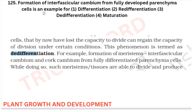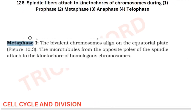Formation of interfascicular cambium from fully developed parenchyma cells is an example of dedifferentiation. In your NCERT, they define dedifferentiation and give the example of formation of meristem or interfascicular cambium or cork cambium from fully differentiated parenchyma cells. This is from your plant growth and development chapter.